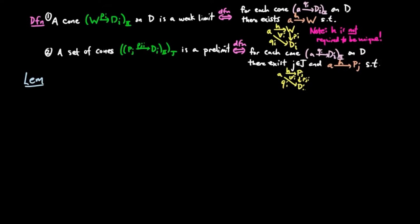We start with the lemma. A functor G which preserves weak limits also preserves monic sources. To prove this,